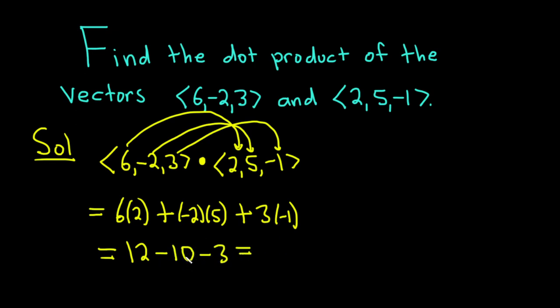So this is 12 minus 10 is 2. So we have 2 minus 3, and so we get negative 1. And that would be the result for the dot product.